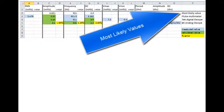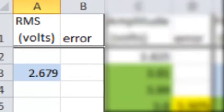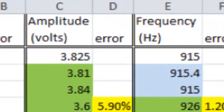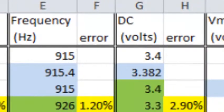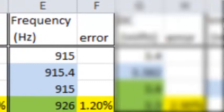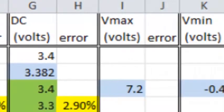I'll explain later. First two columns show the RMS voltage and percent error. Next two columns, voltage amplitude and percent error. Next two columns, frequency in hertz and percent error. Next two columns, DC voltage and percent error.